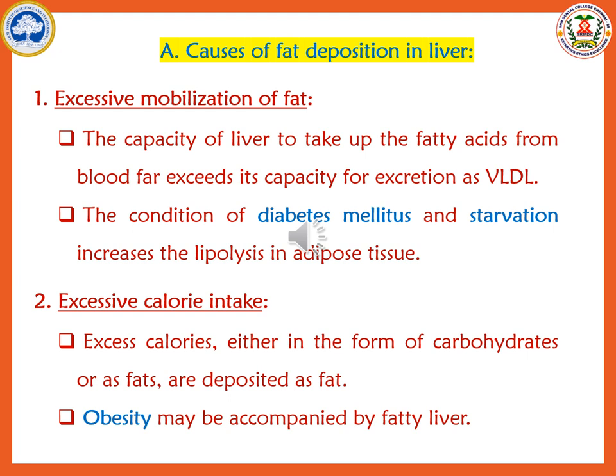The fat that enters the liver cannot be excreted as VLDL or taken to peripheral tissues, so once the fat migrates from adipose tissue it accumulates in the liver, leading to fatty liver. The second reason is excessive caloric intake: consuming excess carbohydrates leads to fatty acid formation because excess acetyl-CoA is diverted into fatty acid synthesis and accumulates in the liver causing fatty liver. A high-fat diet and obesity may also be accompanied by fatty liver.